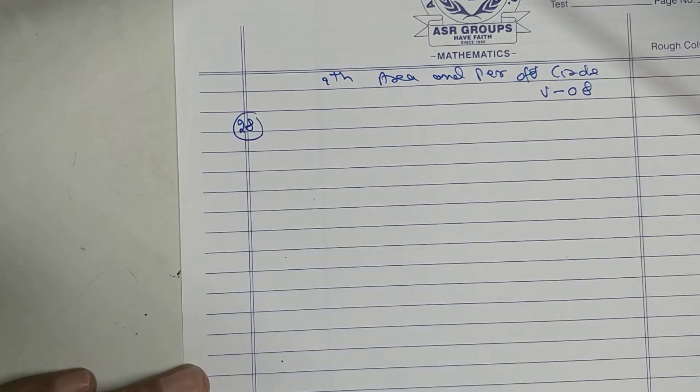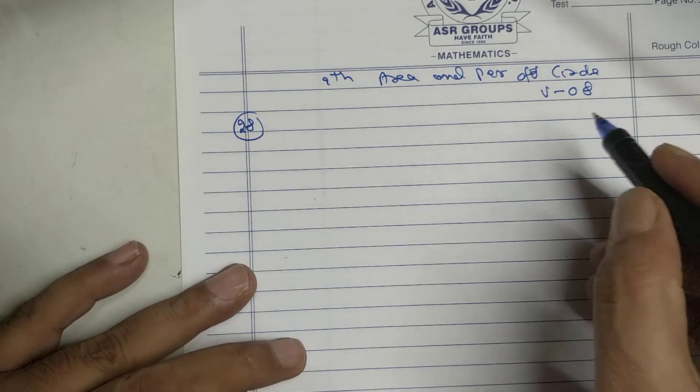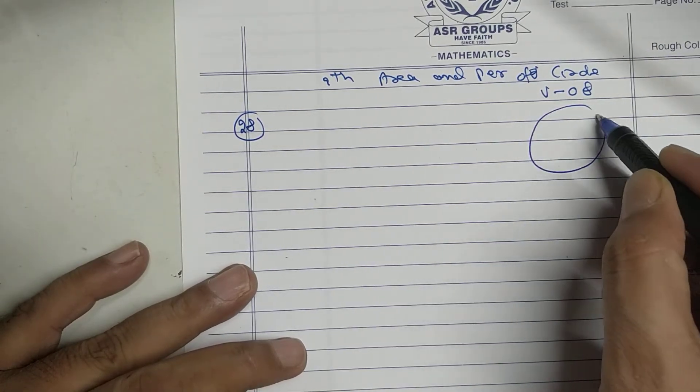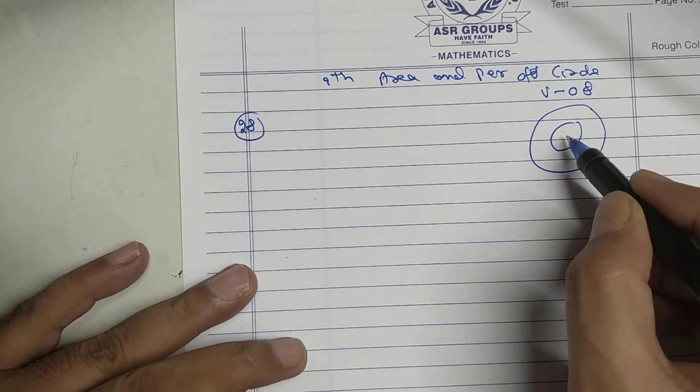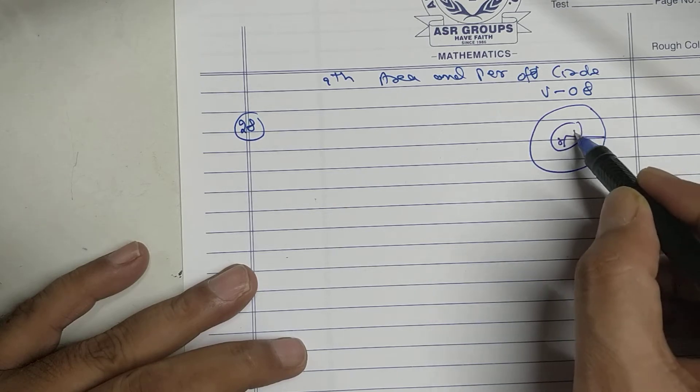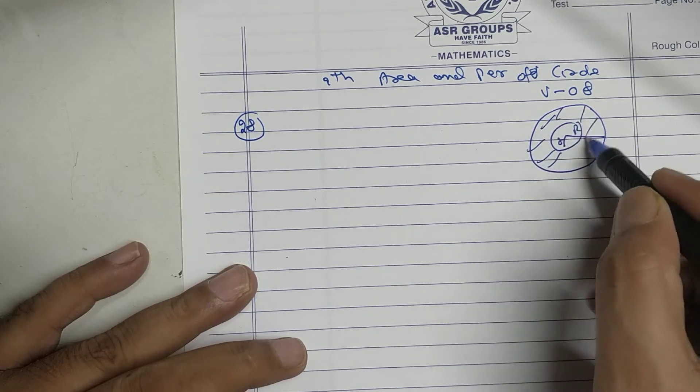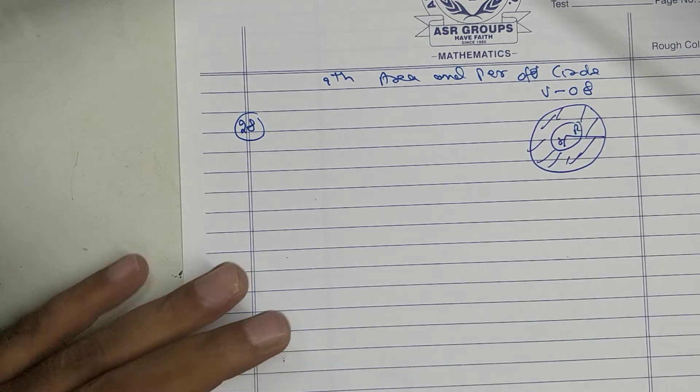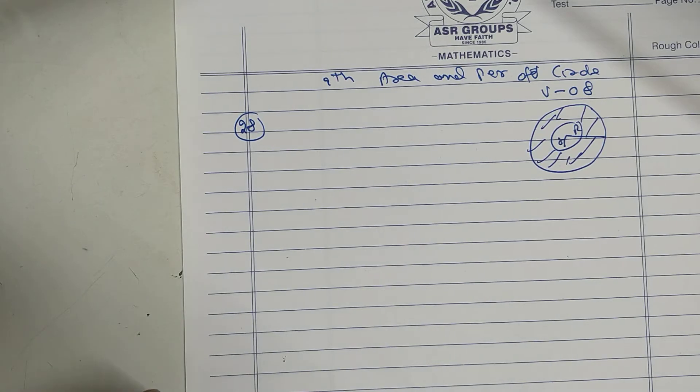Problem 28. Small r, big R. They given both the circumference, inner and outer. We will find out inner and outer radius. Once I get radius, I can find out the area of path.